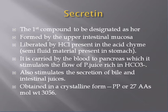Coming to secretin — the first compound to be identified as a hormone. Secretin is formed by the upper intestinal mucosa, liberated by the HCl present in the acid chyme, the semi-fluid material present in the stomach. It is carried by the blood to the pancreas, where it stimulates the flow of pancreatic juice rich in bicarbonates.